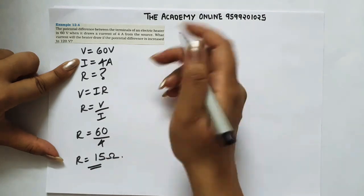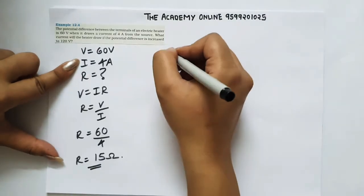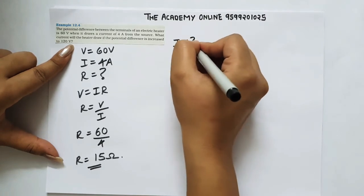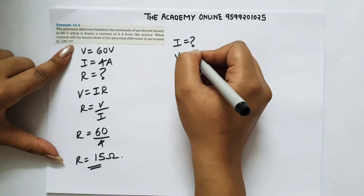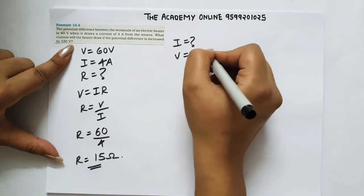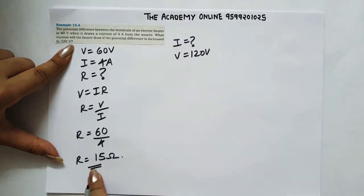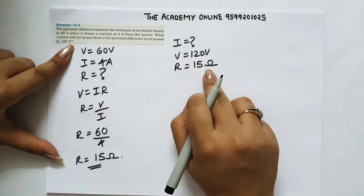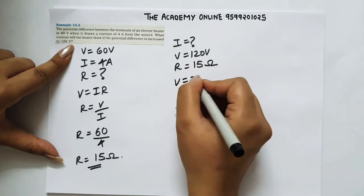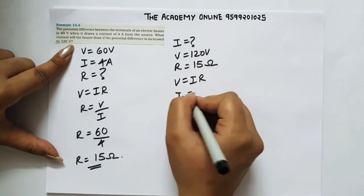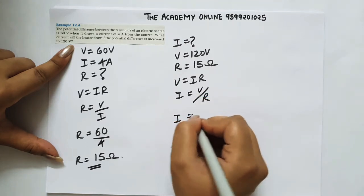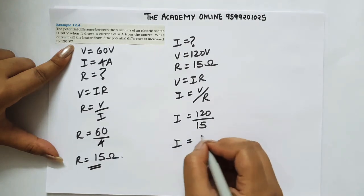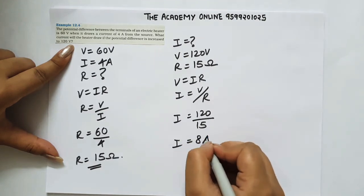Now resistance is the same. I is equal to V by R, that is 120 divided by 15. So you will get 8 amperes.